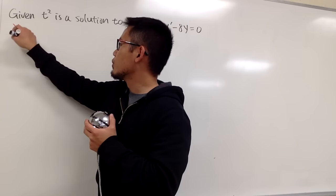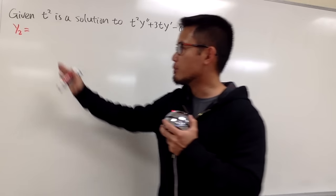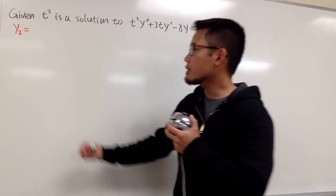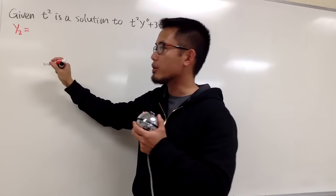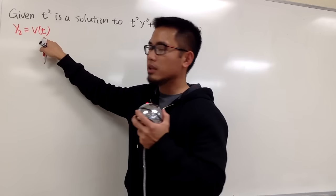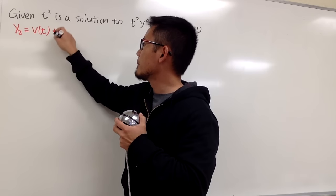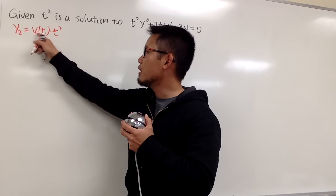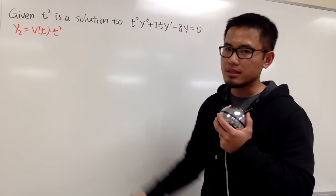Let me write down y2 right here. We are not going to worry about the constant multiple yet — we are just trying to figure out the building block for the solution. For y2, since we are given t squared as the first solution, y2 will just be φ(t), a function in terms of t, multiplied by the first one, t squared. So we put down φ(t) times t squared, and then derive this equation twice.